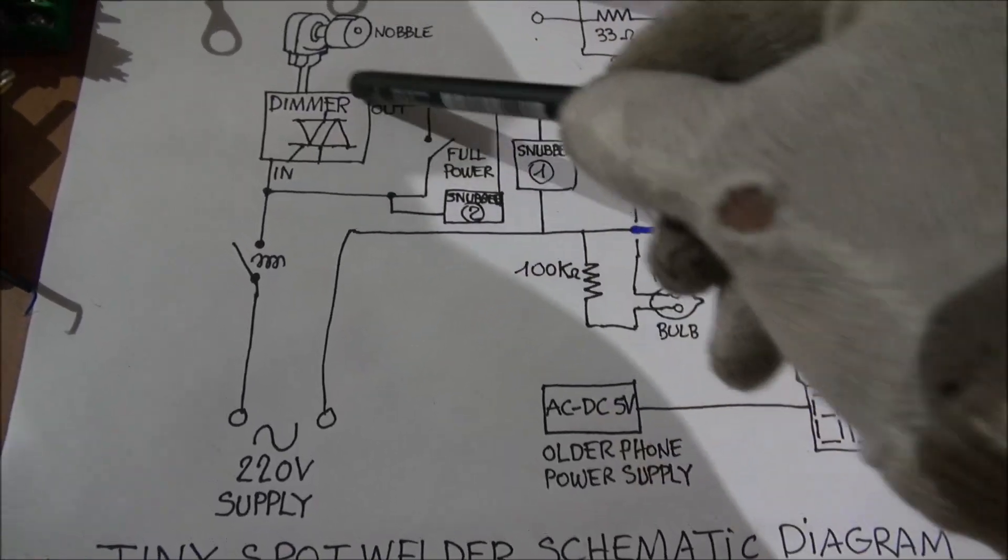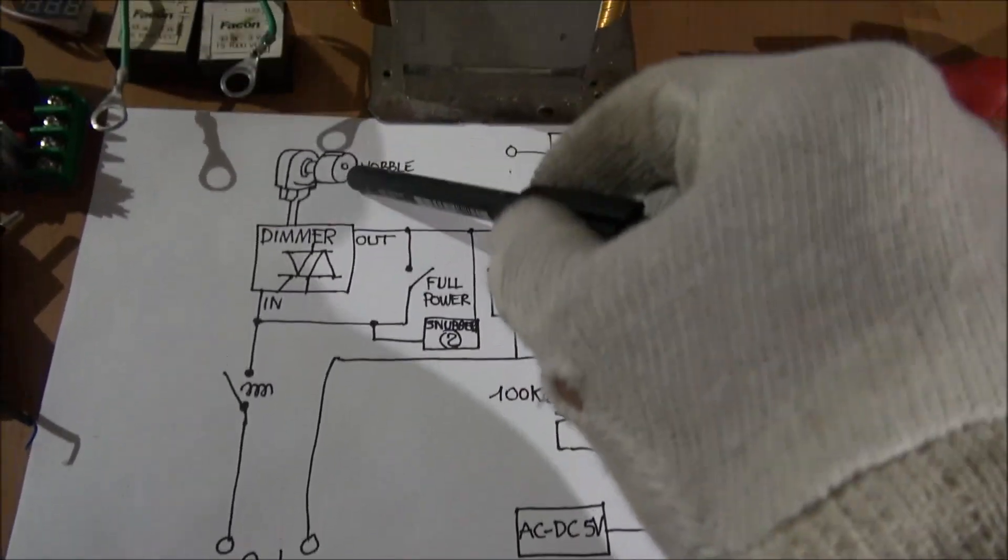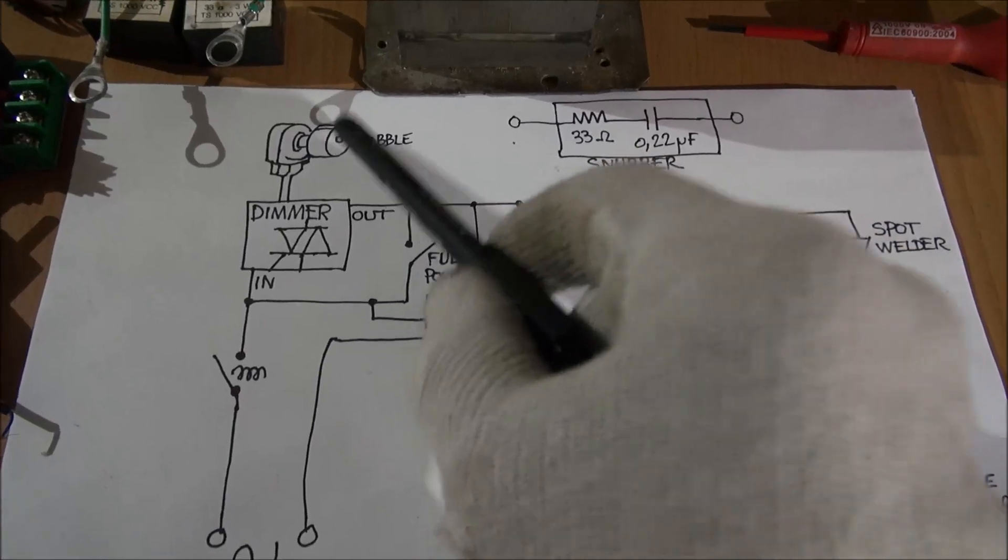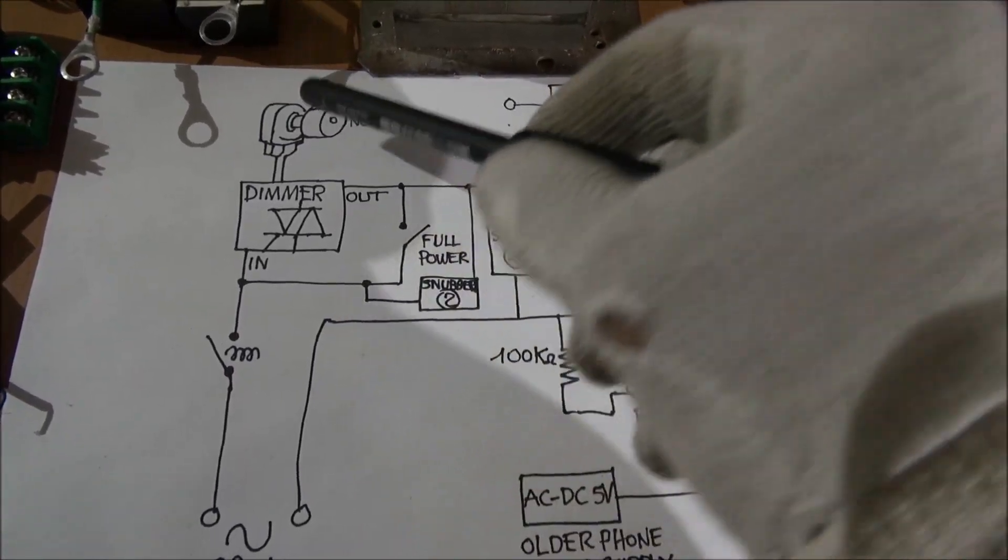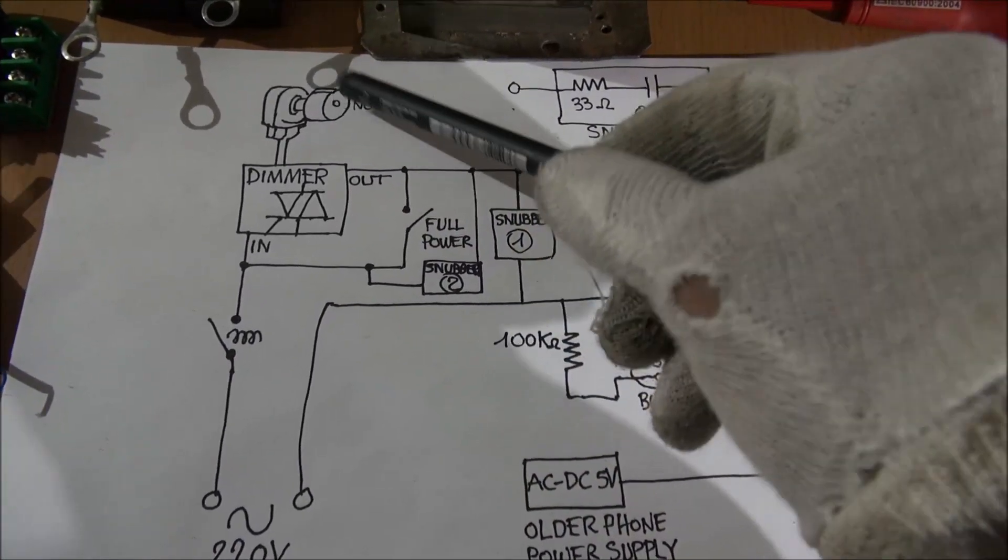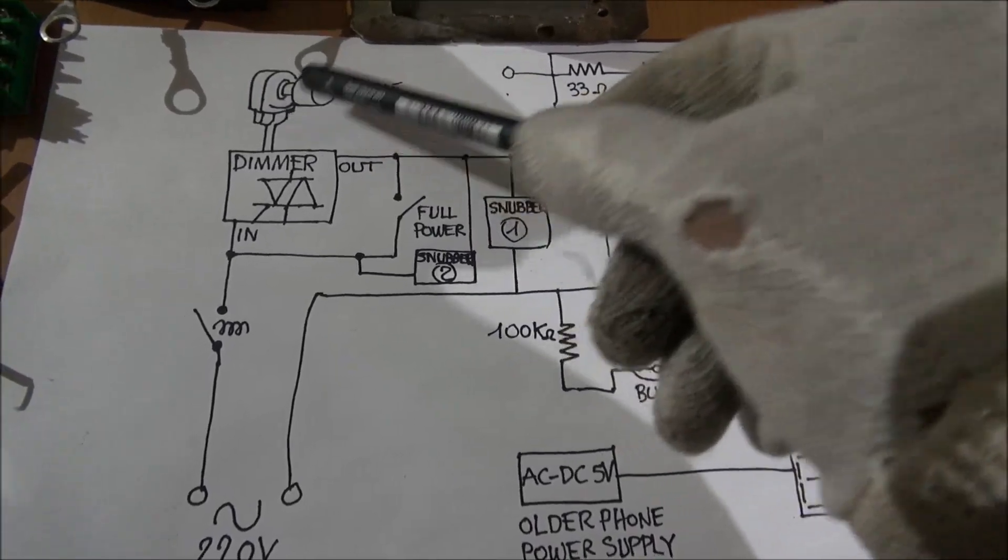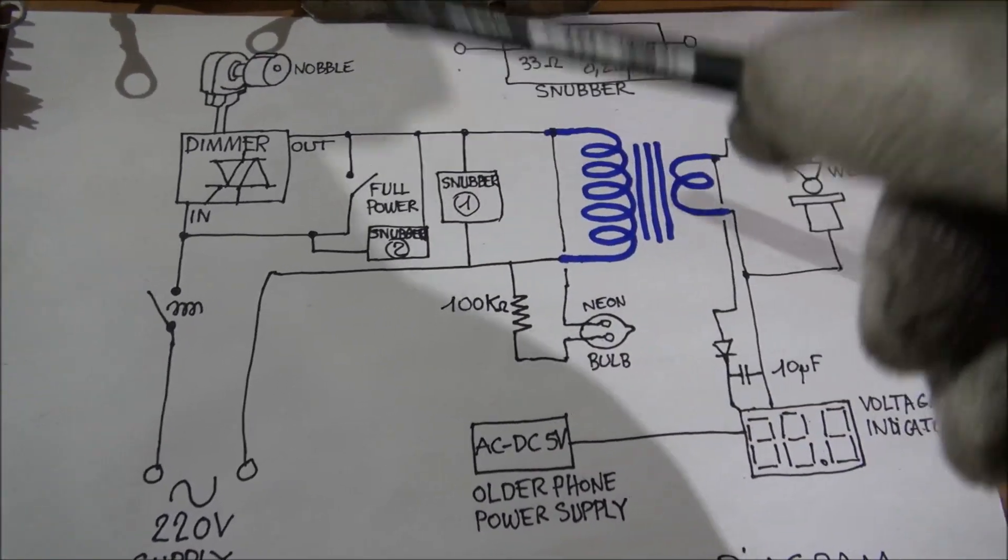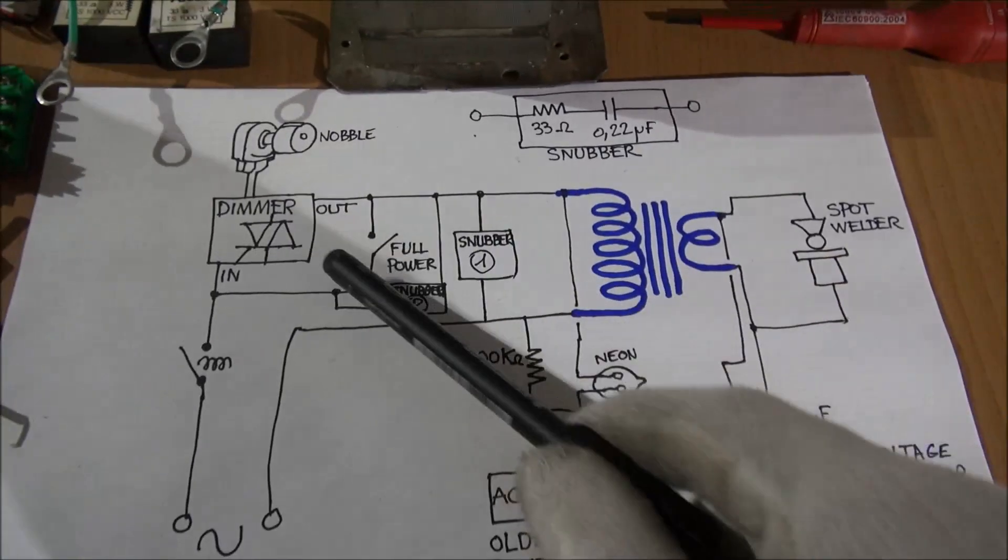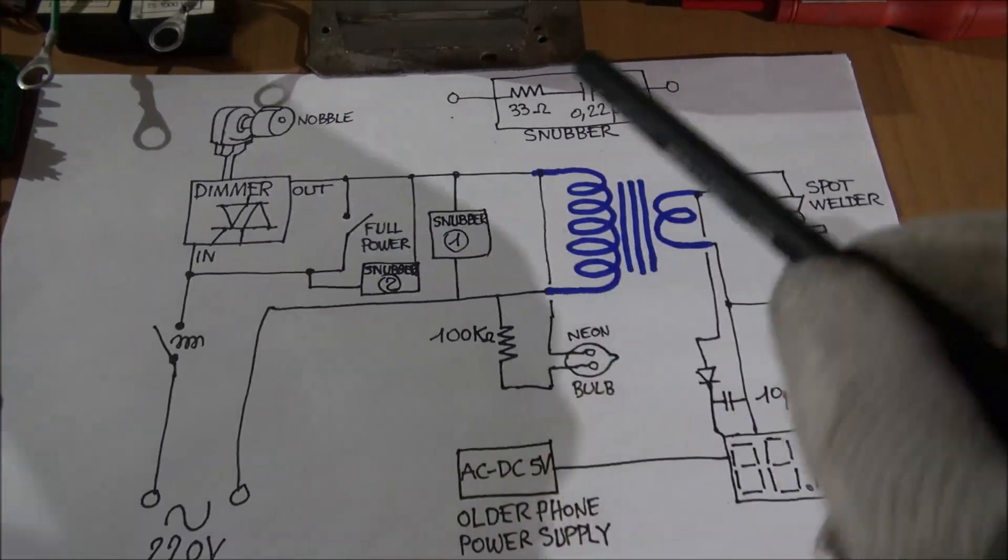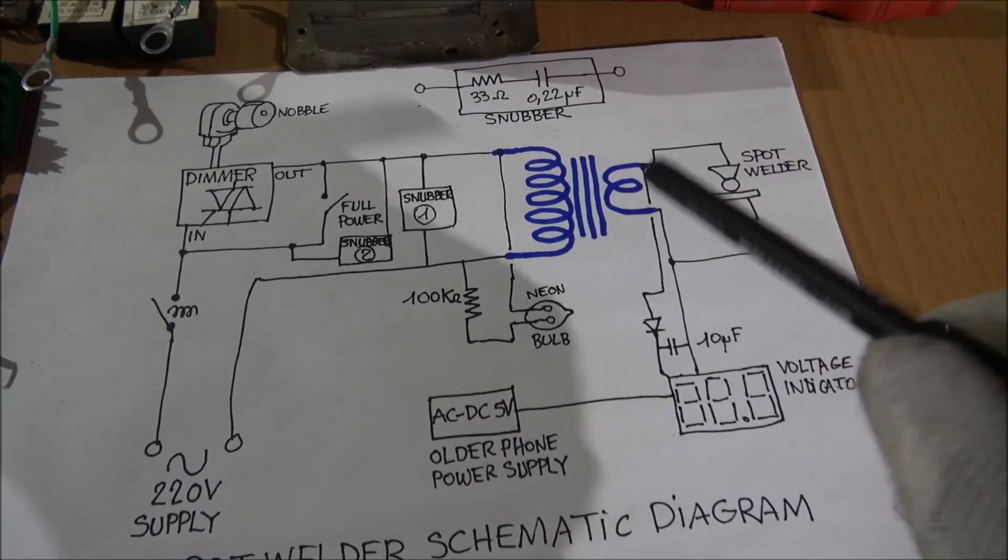The dimmer is here. Here you have the knob. With the knob you can give less power or more power to your spot welder.